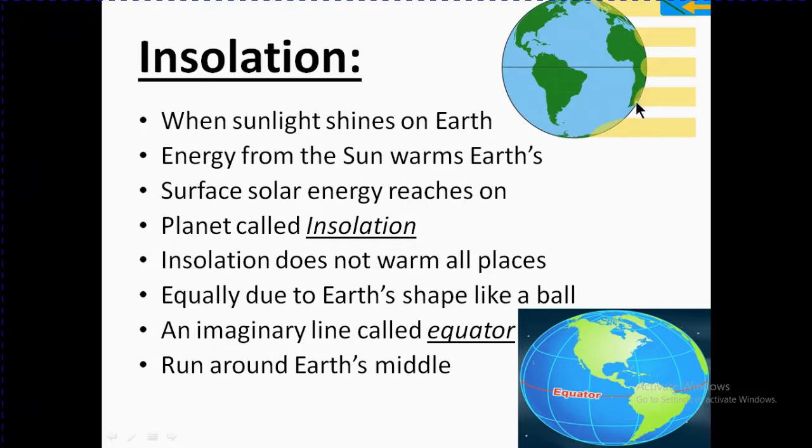Insolation does not warm all places equally. It's very easy to understand this due to Earth's shape. When sunlight comes from the Sun and strikes the surface of the Earth, Earth's surface is not similar everywhere because it's a curved surface, just like a ball.